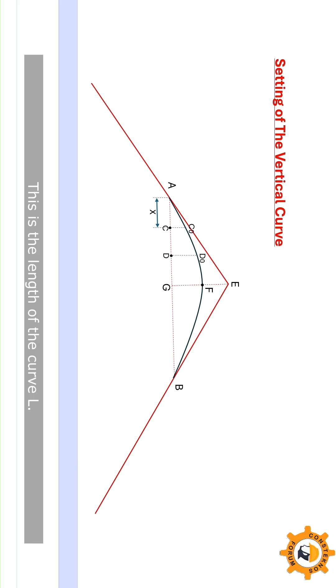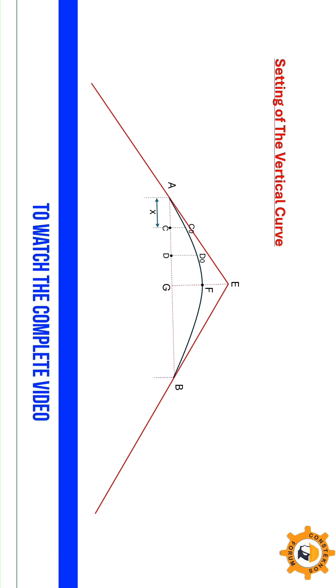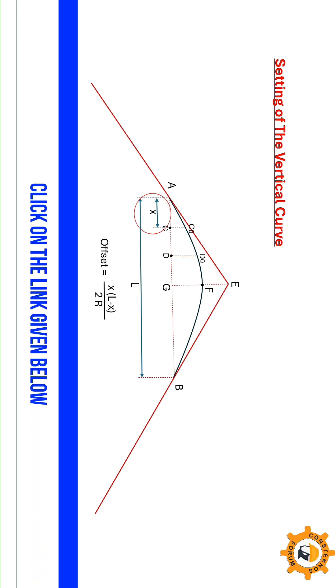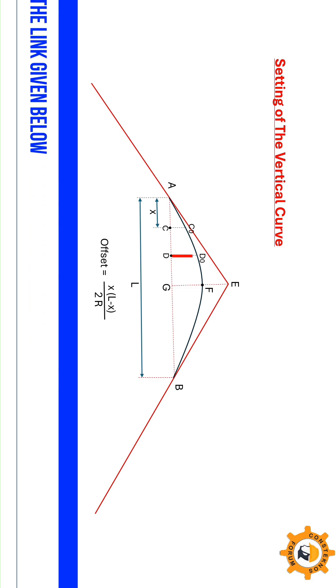This is X. This is the length of the curve L. This offset is calculated using this equation. At any distance X, you can find out what is the offset from the chord.